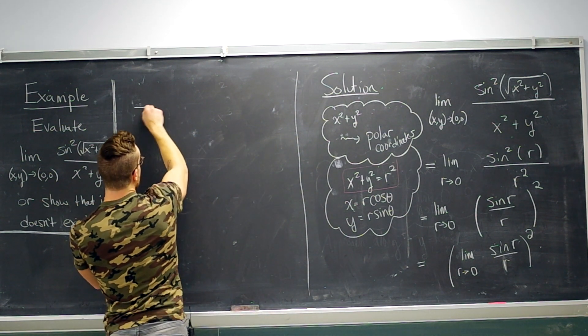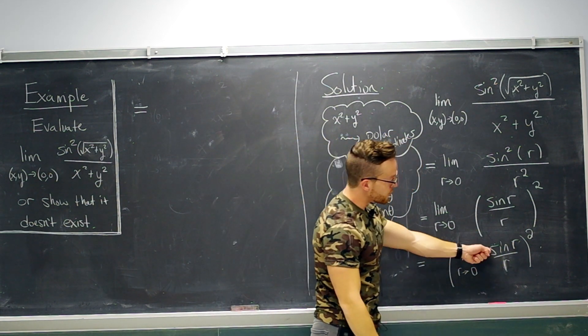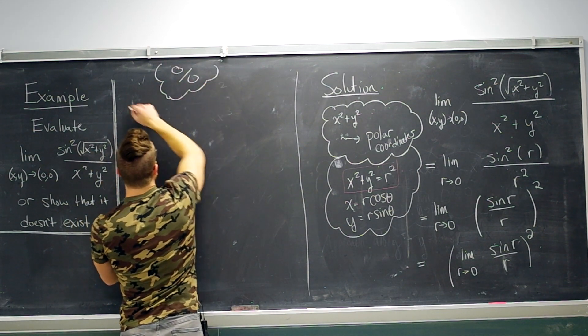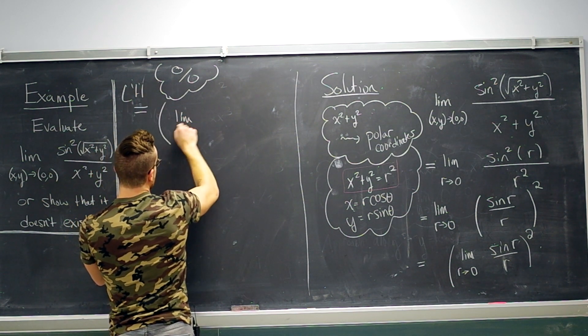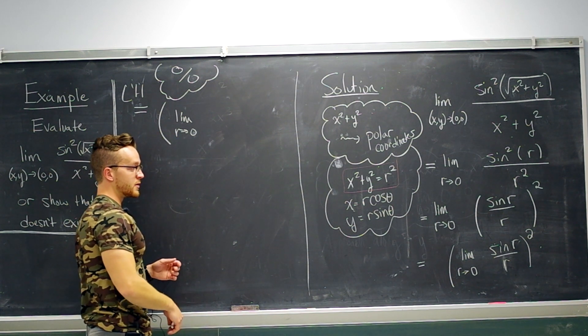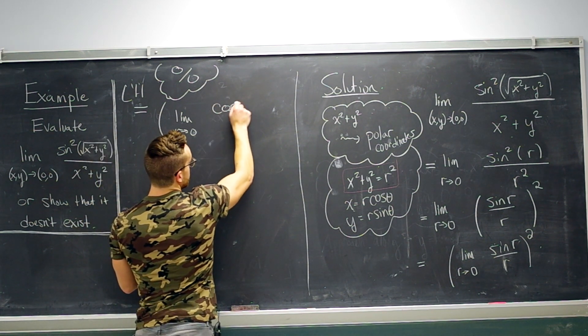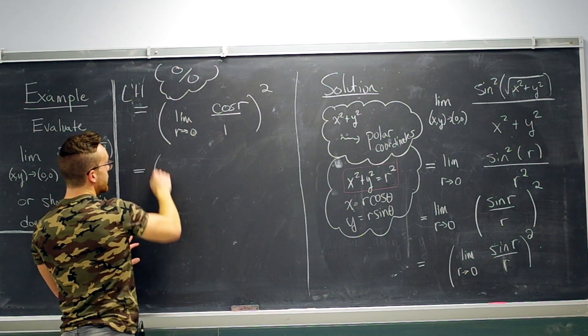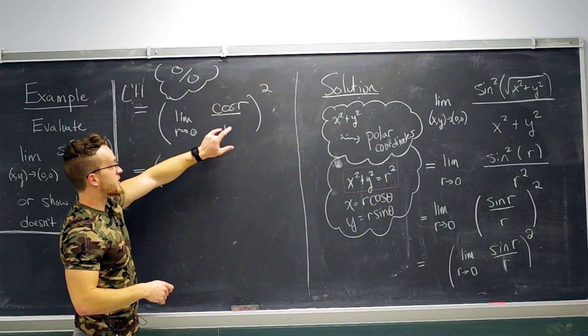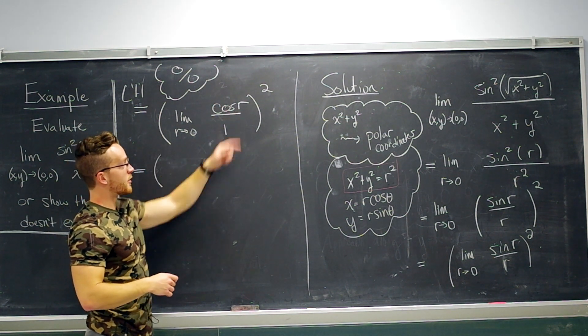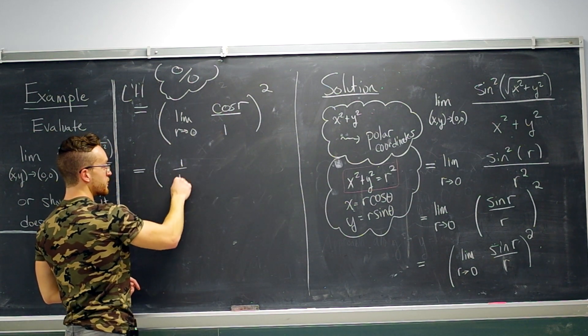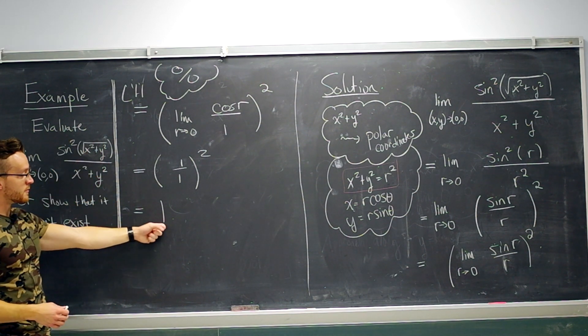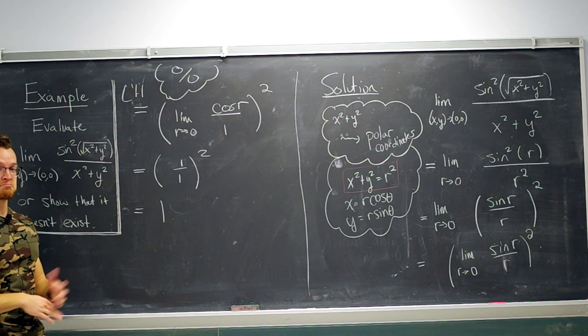So continuing from down there, inside the squared, the numerator and denominator are both going to zero. That's an indeterminate form of type 0 over 0, which means we can use L'Hôpital's rule. The derivative of the numerator is cosine of r. The derivative of the denominator is one. Then, after doing that, the inside limit here is continuous. We can just evaluate at r equals zero. Cosine of zero is one. So this is one over one. And we're done. This shows that this multivariable limit, first of all, exists. And it equals one. Done.